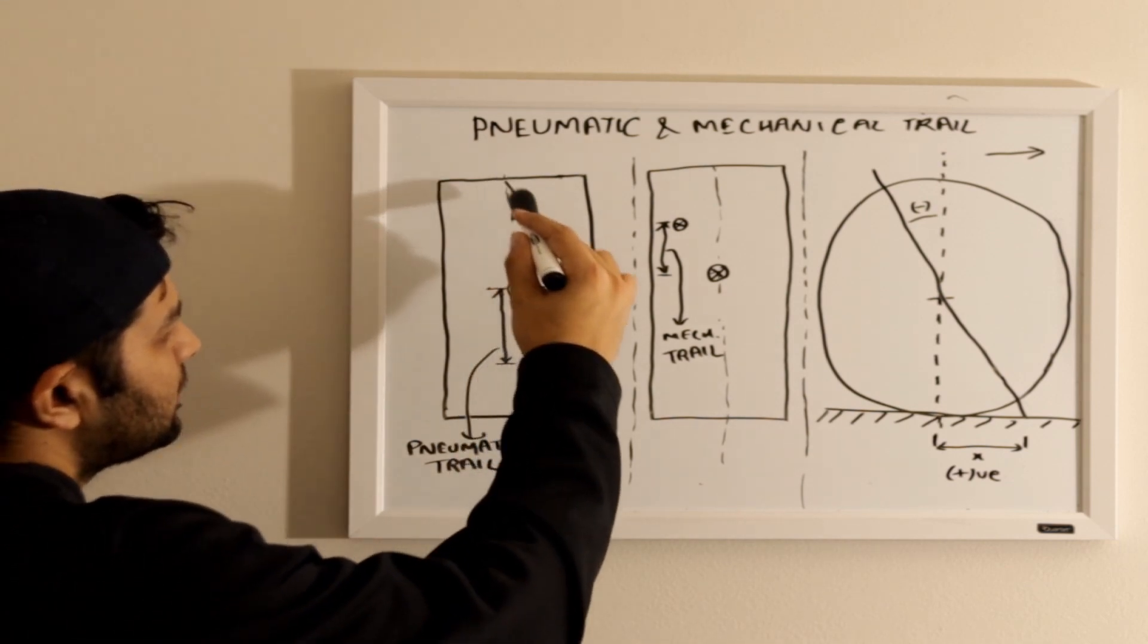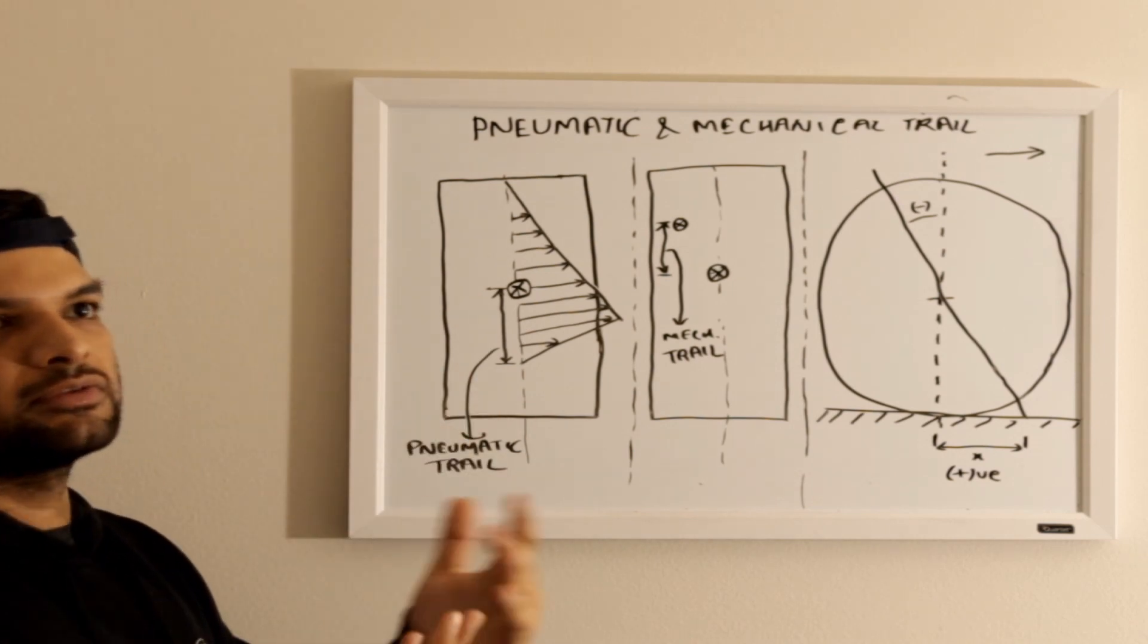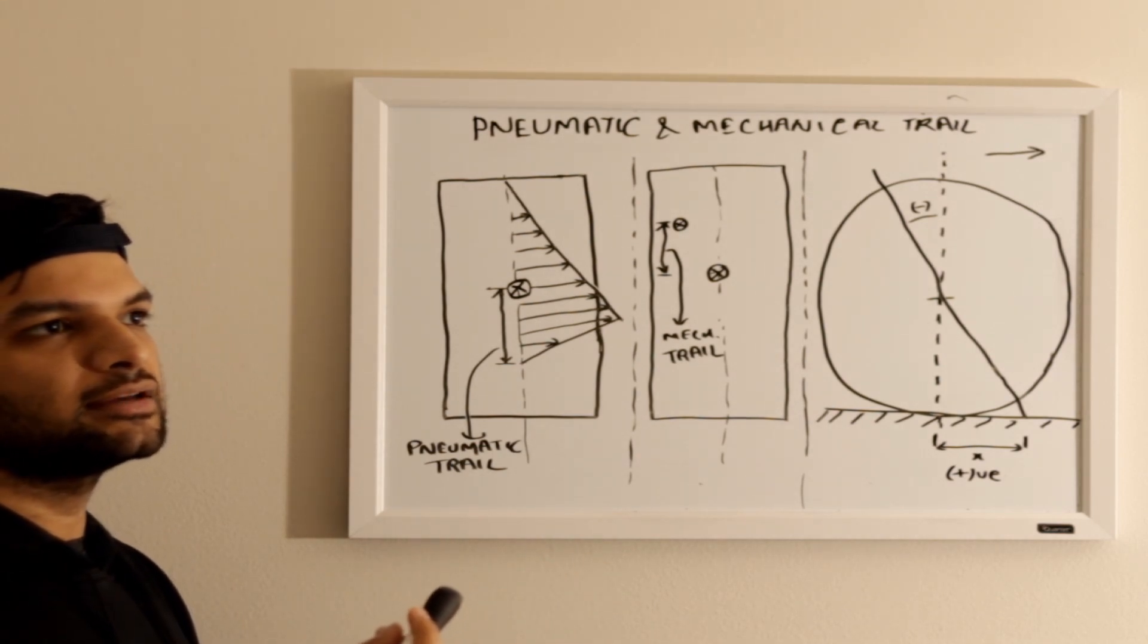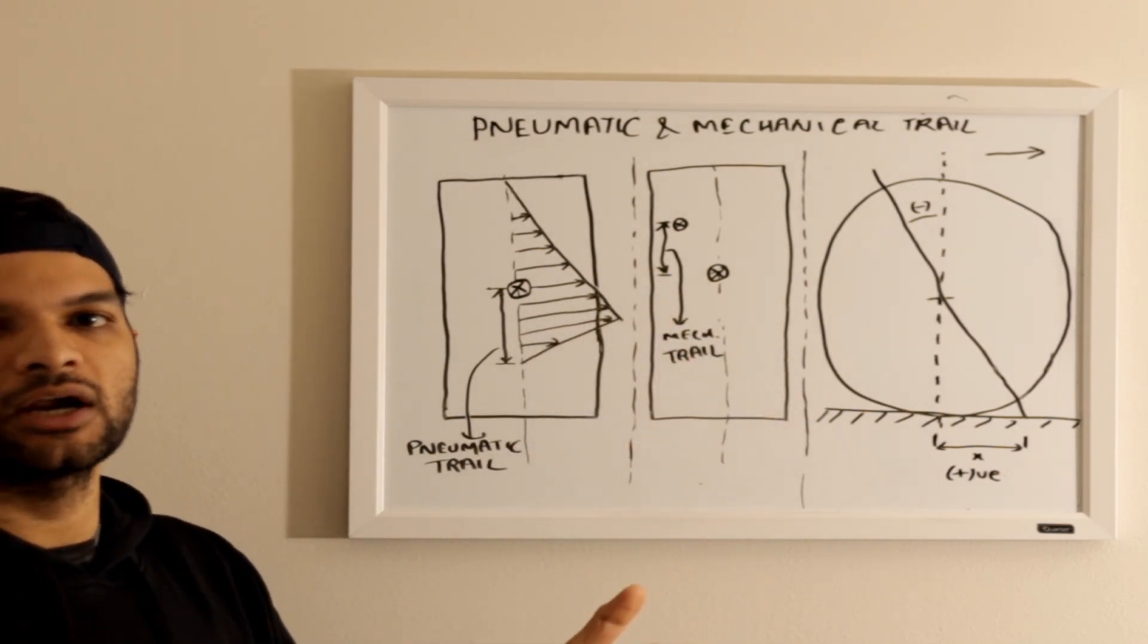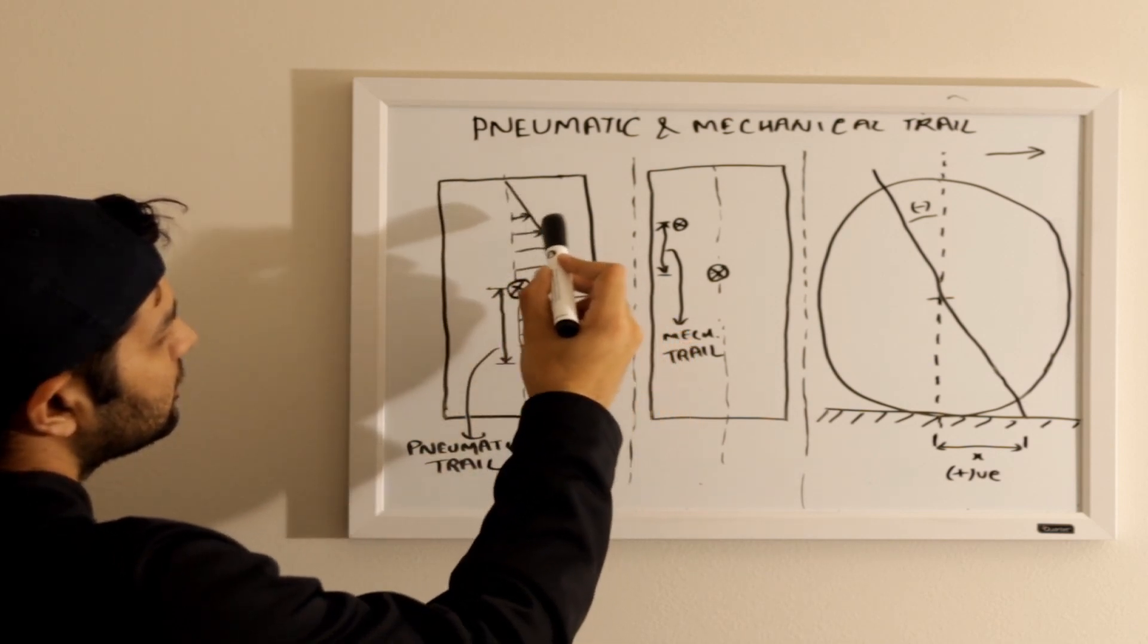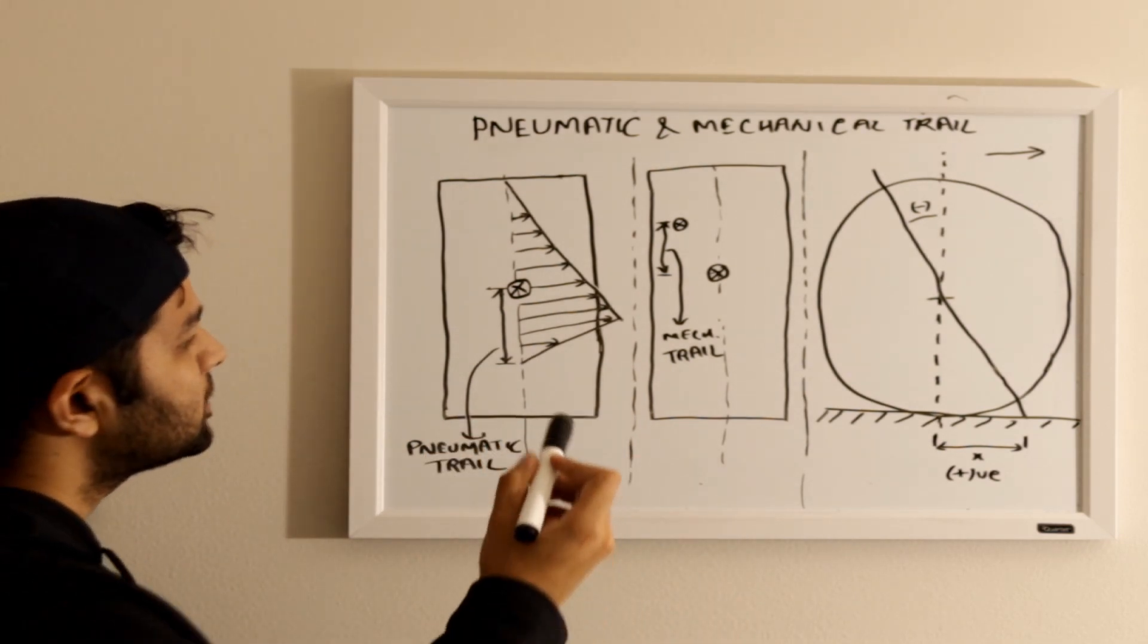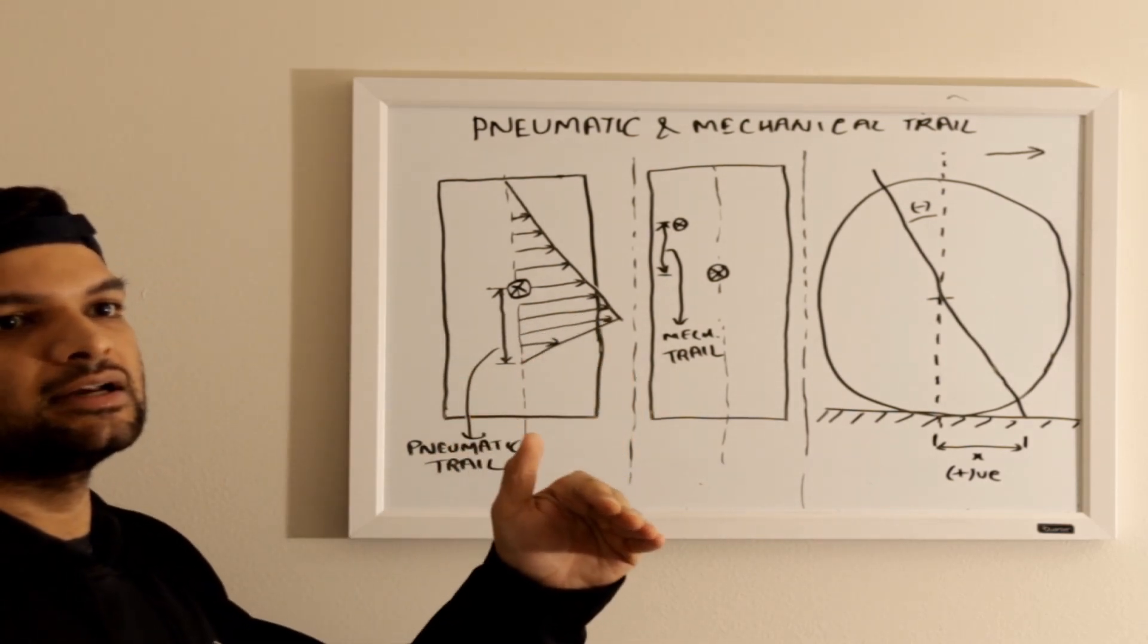So essentially, whenever there is this contact patch, little forces are generated. When the forces are generated, they're not generated at a single point. Rather, the single point is assumed as a resultant of forces acting throughout the contact patch. There is this contact patch and there are multiple forces acting throughout it. The pattern of forces acting on a contact patch is like it keeps on increasing and it's the highest beyond the center point.